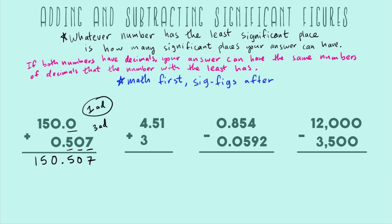That means we have to round our final answer to one after the decimal because we can only have our answer be as accurate as our least accurate number in our math. In this case, we round between these two. There's no rounding up. So our final answer is 150.5.